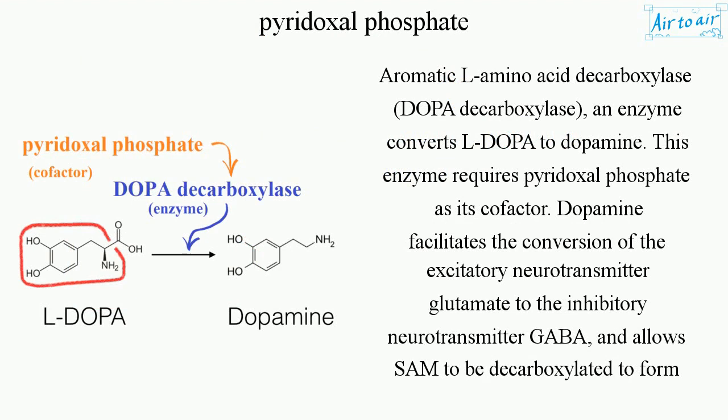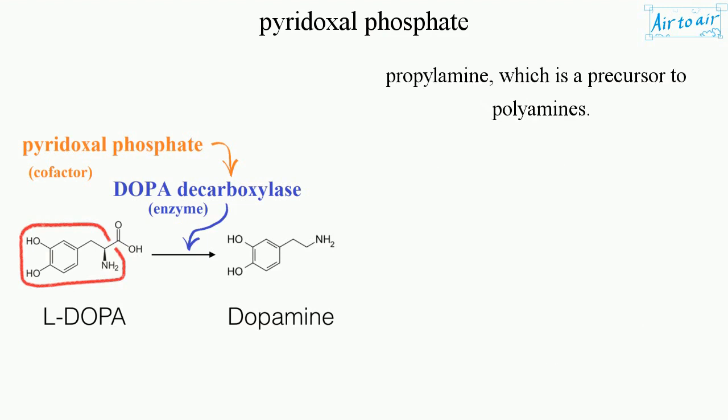Aromatic L-Amino Acid Decarboxylase, also known as Dopa Decarboxylase, is an enzyme that converts L-dopa to dopamine. This enzyme requires pyridoxal phosphate as its cofactor. Dopamine facilitates the conversion of the excitatory neurotransmitter glutamate to the inhibitory neurotransmitter GABA, and allows SAM to be decarboxylated to form propylamine, which is a precursor to polyamines.